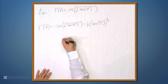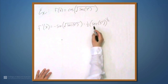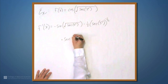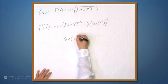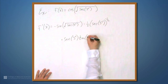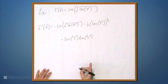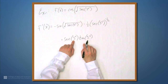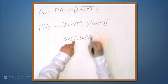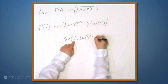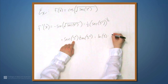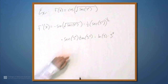The derivative of secant is secant times tangent. So we have secant of 3 to the x times tangent of 3 to the x. And finally, we have to multiply by the derivative of what's inside each of these — what's inside the secant, which is 3 to the x — times the natural log of 3 times 3 to the x.